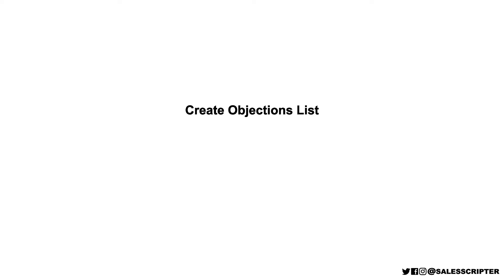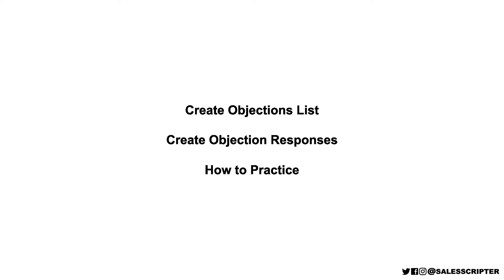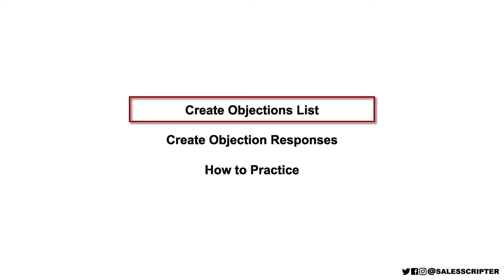The first step in role playing your sales objections is to create an objections list of the objections that you should role play and become prepared for. After you have that list, you want to create responses to those objections. Then there are a few options you have for how to practice and role play those objections — and these three things are what we're going to talk about in this video, starting with creating an objections list of objections you can anticipate as a salesperson.